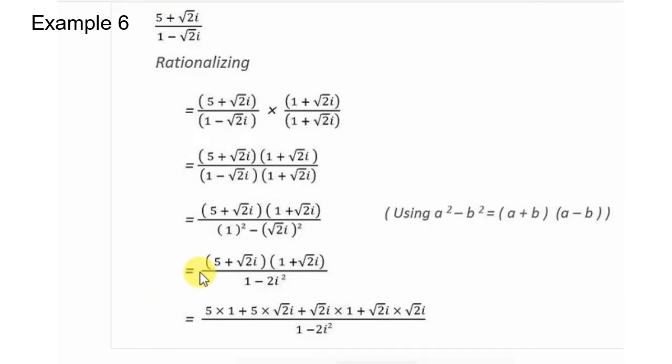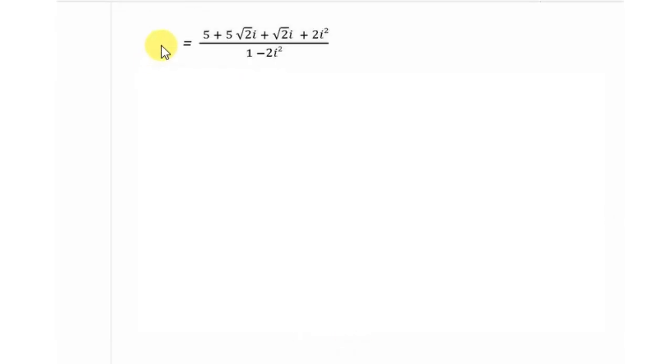Now, multiplying the numerator terms: 5 times 1, 5 times root 2i, root 2i times 1, and root 2i times root 2i. You get this. Next, here it will be 5 plus 5 root 2i plus root 2i plus 2i squared, divided by 1 minus 2i squared.